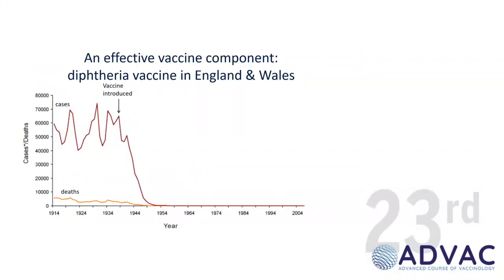I wanted to start with something that came before my lifetime: the introduction of diphtheria vaccines in England and Wales. This encapsulates a lot of different concepts. Now it's very difficult to persuade anybody that diphtheria is an important disease. I use this slide with my undergraduates — if you want to argue against people who don't like vaccines, look at the numbers. These are people infected, very ill or dying before the introduction of the vaccine. Then you see a very steep reduction, which is characteristic of herd immunity effects.